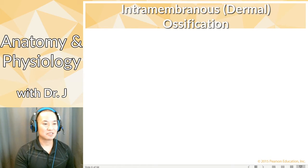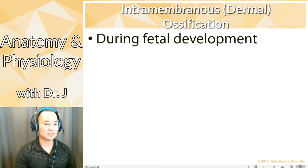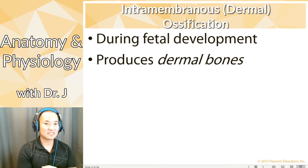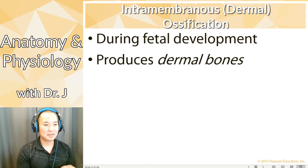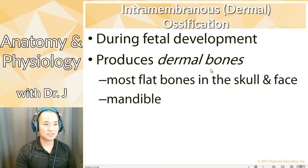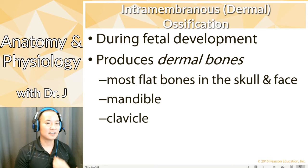Intramembranous ossification occurs during fetal development and produces dermal bones. Don't confuse it with the dermis when fully developed — the dermis is all connective tissue, and what's happening is that a membrane of connective tissue is starting to become ossified and become bone. Most of the flat bones in your skull and face were developed during fetal development via intramembranous ossification, including things like your mandible — your lower jawbone.